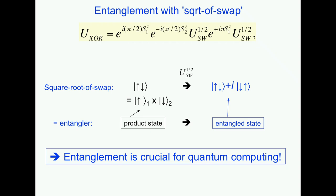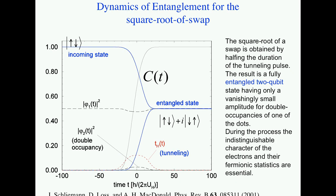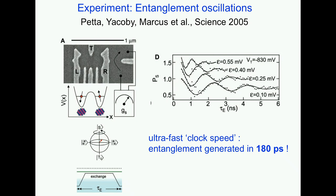For estimates of switching speed: entanglement is crucial for quantum computing. You start with a product state, turn on exchange coupling, and go to an entangled state. An experiment from 2005 demonstrated for the first time that entanglement can be generated as a function of this coupling, with a timescale of about 200 picoseconds. This shows how fast the system can be — a few hundred picoseconds compared to decoherence times of hundreds of microseconds, giving a large window for many operations, which is needed for the fidelity threshold of the surface code.